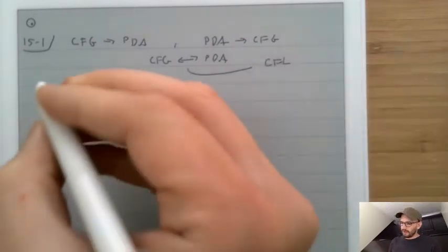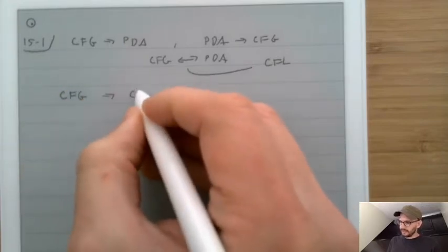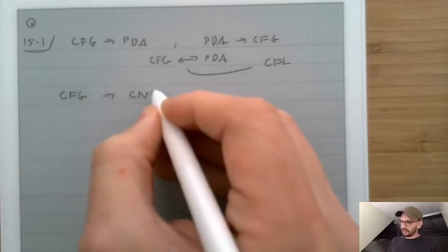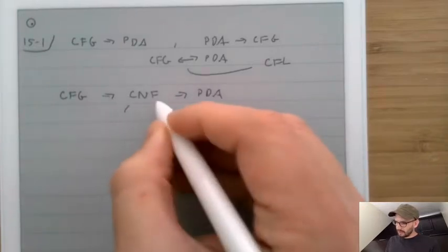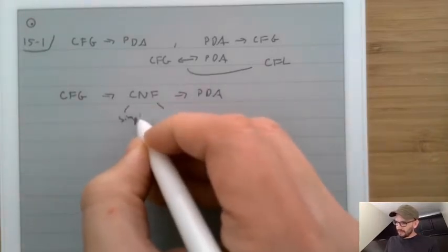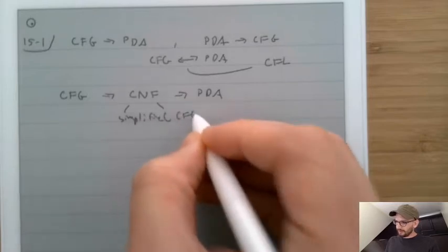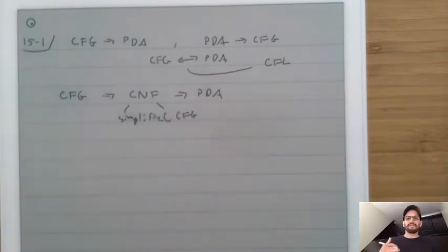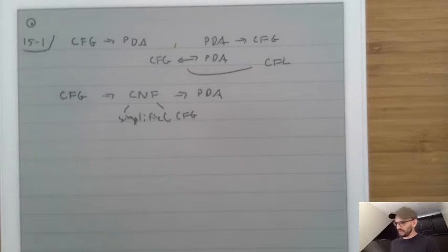Recall that when we converted context-free grammars into PDAs, we first translated them into Chomsky Normal Form, and then into a PDA, where Chomsky Normal Form was a simplified version of a context-free grammar. We're going to do something very similar with PDAs.